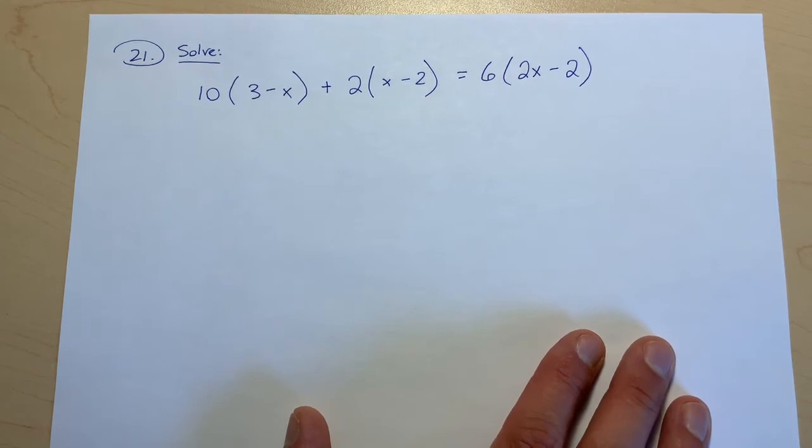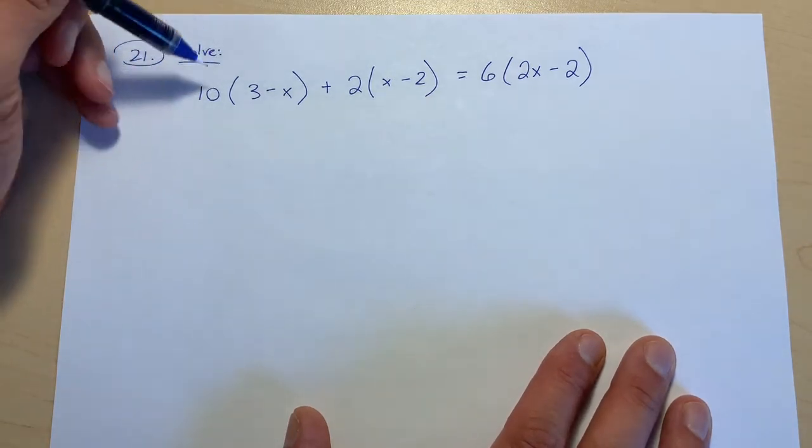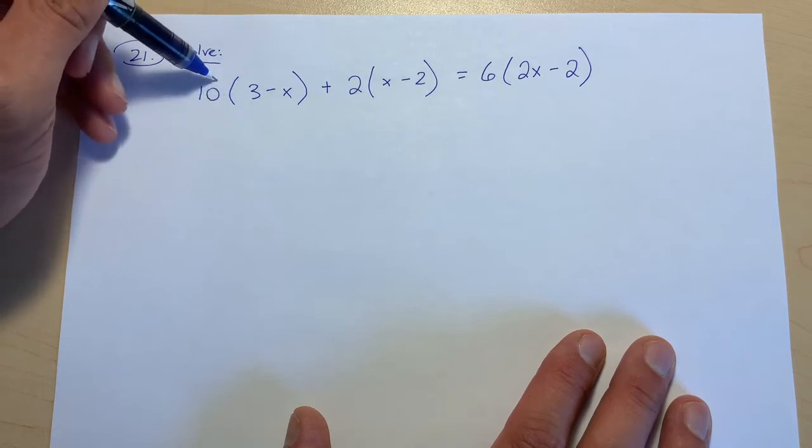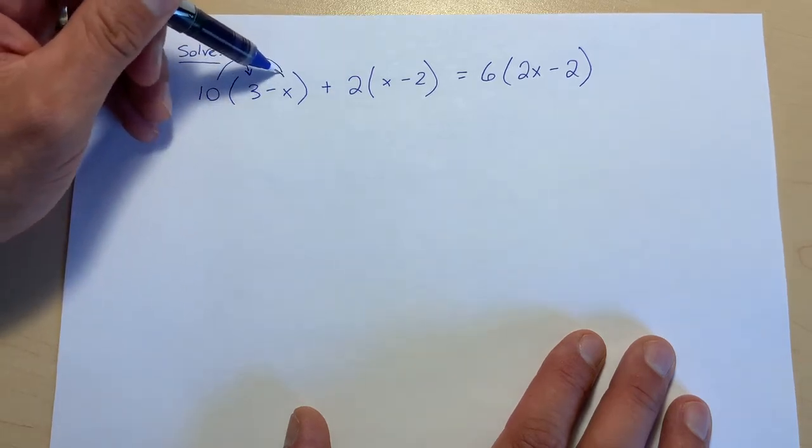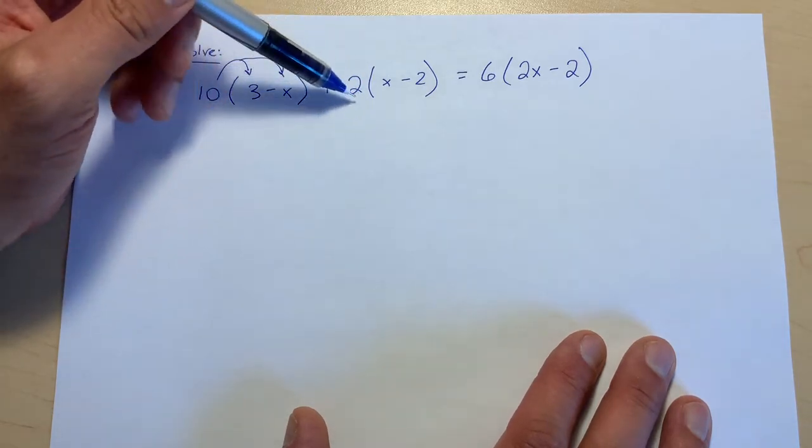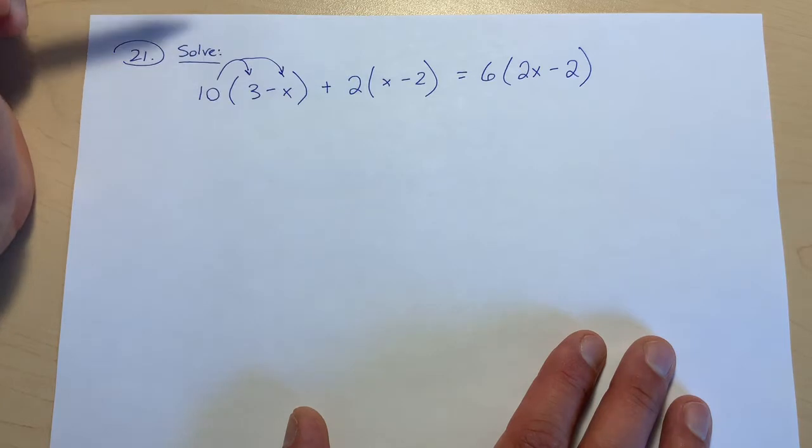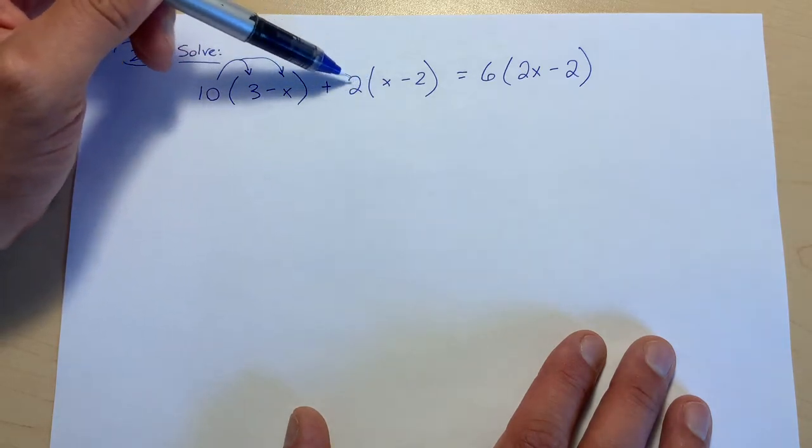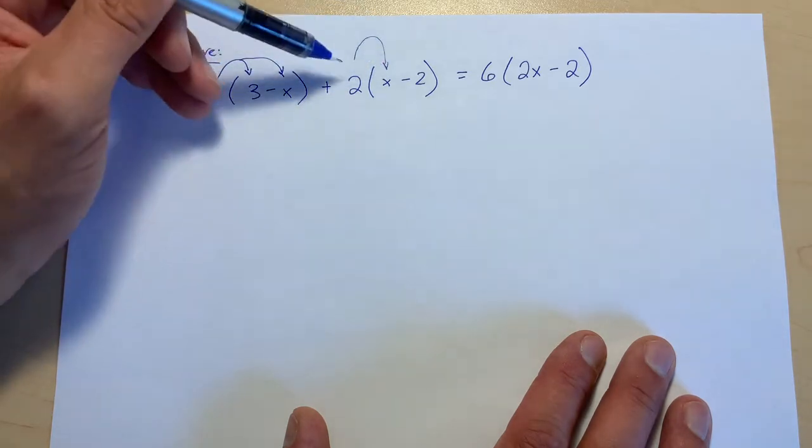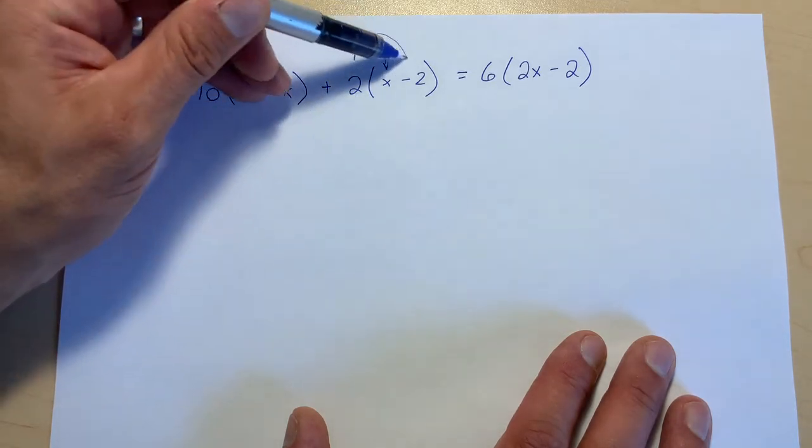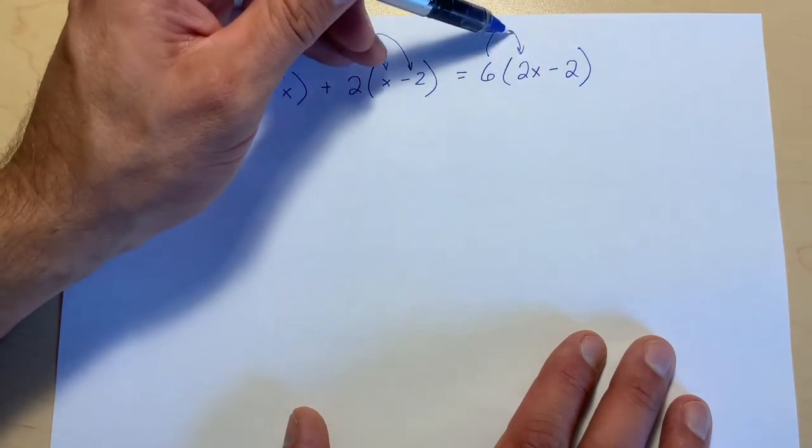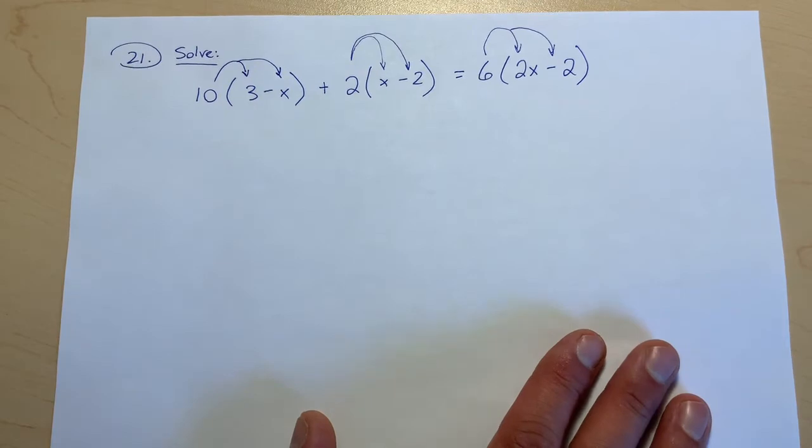So what we're going to do is we're going to take this 10, we're going to take the thing just outside this bracket and multiply it by each term inside the bracket. Remember when you see something like this 2 or like this 6 or the 10 when it's attached to the bracket but there's no sign in between, we assume multiply. So this is saying 2 times x and 2 times negative 2, and 6 times 2x and 6 times negative 2.